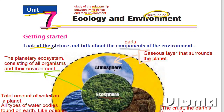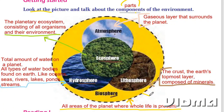Look at the picture and talk about the components of the environment. Components means parts — so the parts of the environment. This is our Earth, the planet. Our Earth or our environment is made of five major components: biosphere, lithosphere, hydrosphere, ecosphere, and atmosphere.